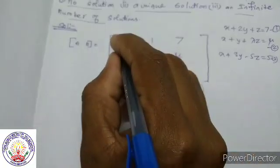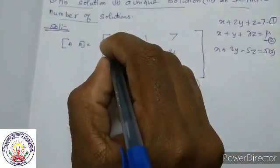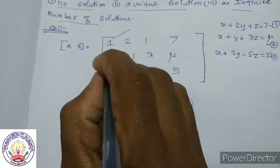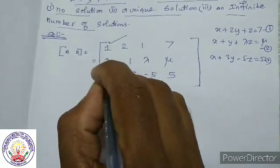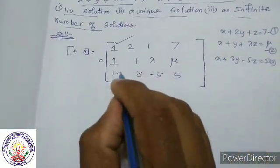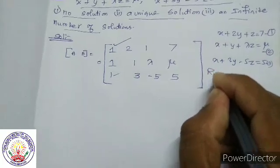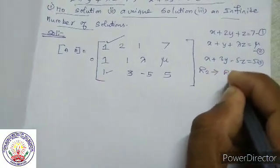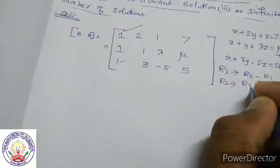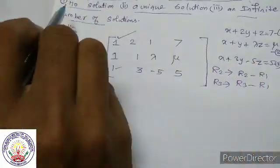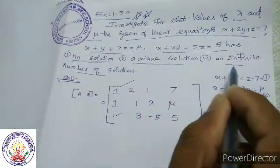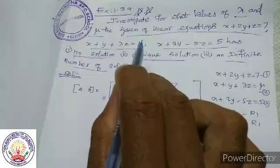Row echelon form: R1 — first to add is non-zero element. For the second row, apply R2 gives R2 minus R1. R3 gives R3 minus R1. This question has 3 types of solutions to determine: no solution, unique solution, and infinite number of solutions.